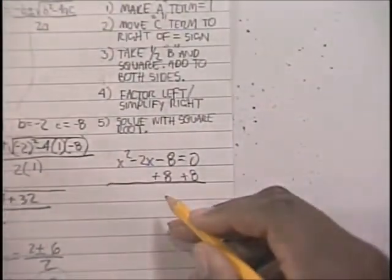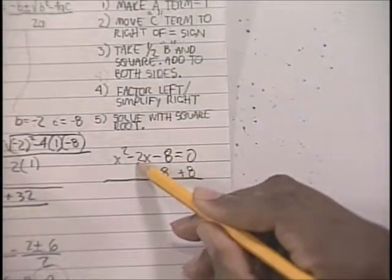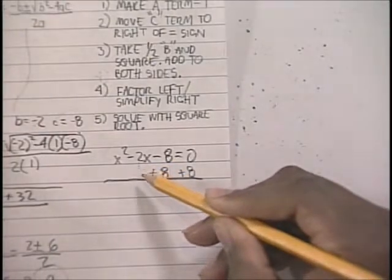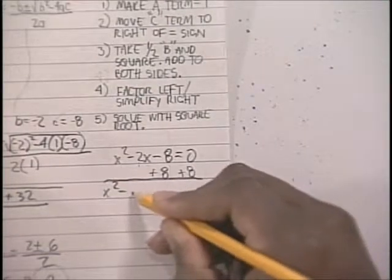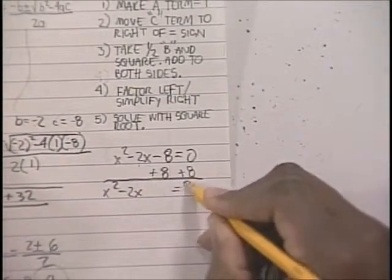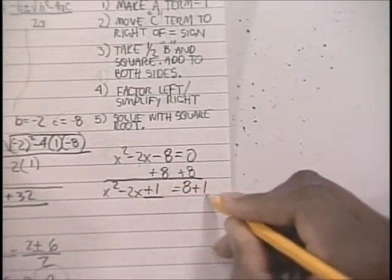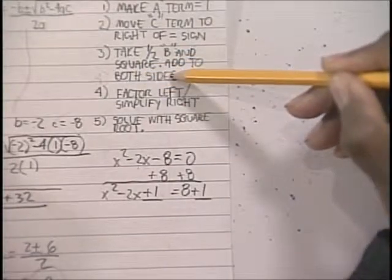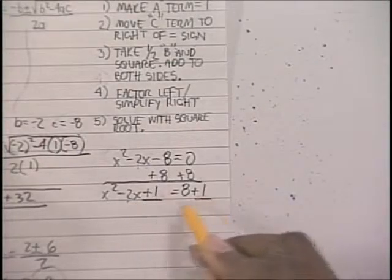The next step is to take half of the b term and square it. Well, your b term here is negative 2. Let's take half of negative 2 and then square it. Half of negative 2 is negative 1, and when you square negative 1, you get positive 1. So we added the 8 over, took half of this and squared it—you end up with positive 1. We're going to add positive 1 to both sides.